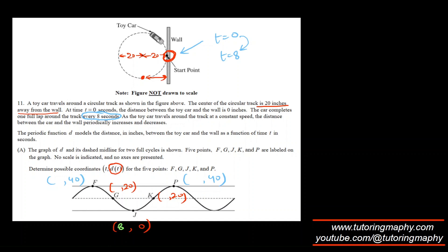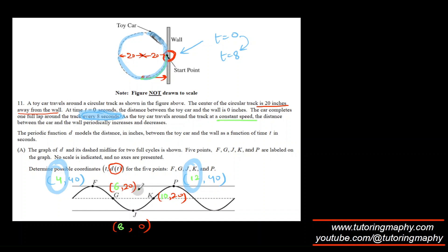Since the car moves at constant speed, it completes a quarter circle every 2 seconds. So the labeled points are spaced 2 seconds apart: at t equals 2, 4, 6, 8, 10, 12. The x-coordinates of the five labeled points are 2, 4, 6, 10, and 12, with y-coordinates of 20, 40, 20, 0, and 20 respectively. The interval between t equals 4 and t equals 12 is 8 units, confirming the period.